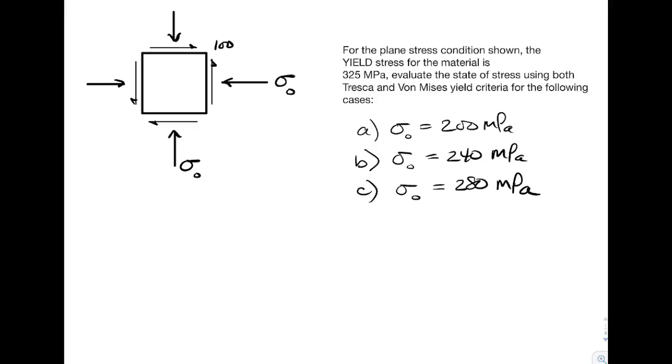We'll do a yield criteria problem with both Tresca and von Mises. You see that the normal stresses on both faces have the same value. Parts A, B, and C will slowly increase from 200 up to 280 MPa. This material has a yield stress of 325 MPa.